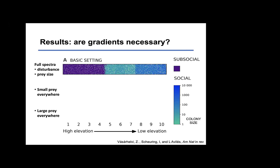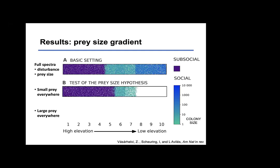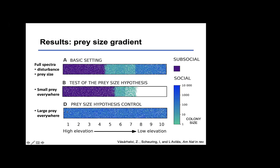To test whether these gradients are necessary, we run experiments. First, we maintain the disturbance gradient but place small prey everywhere. The prediction is that social species will be excluded in the absence of large insects — and this is exactly what we observe. Then we do the opposite: large prey everywhere. The prediction is that social species will do better and take over the grid, outcompeting sub-social species even at high elevations. This is what we see: with large prey everywhere, the social species takes over the entire landscape.